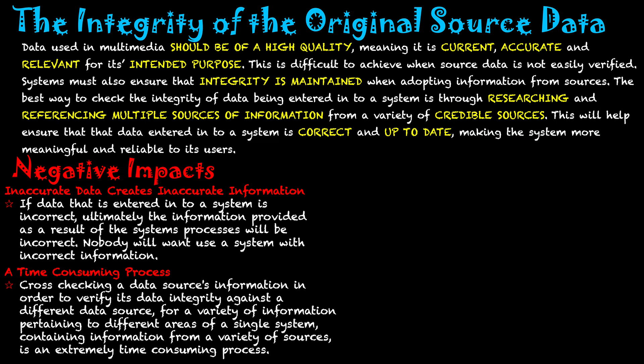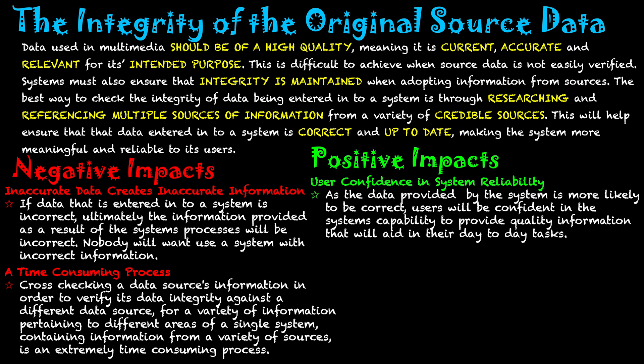There is a lot of good behind this, and that's the reason we create systems with good data integrity. The first reason is user confidence in the system's reliability. As data provided by the system is more likely to be correct, users will be confident in the system's capability to provide quality information that will aid in their day-to-day tasks. That confidence helps them, because the information is correct and helps them produce work that is correct because it's based on the system's data.